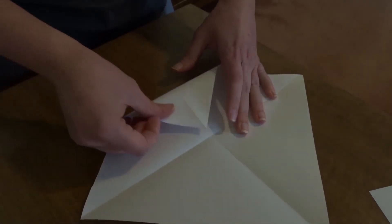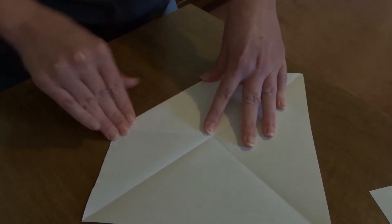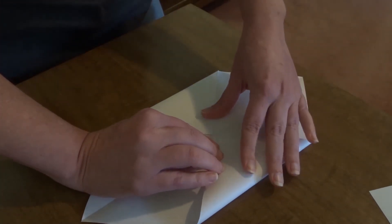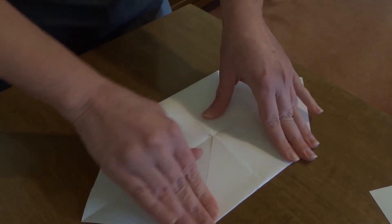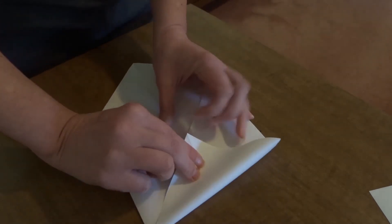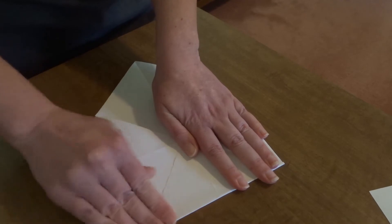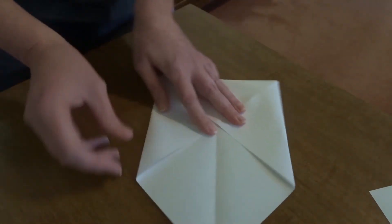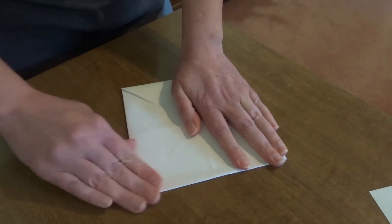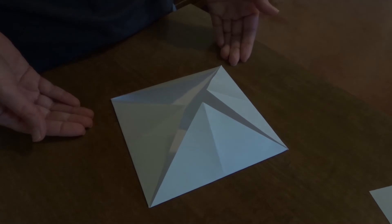Then what we do is we fold all four corners of our square into the middle, and that's where that X helps, because it helps us know where the middle is. Once we have all four corners folded into the middle, we end up with another square.